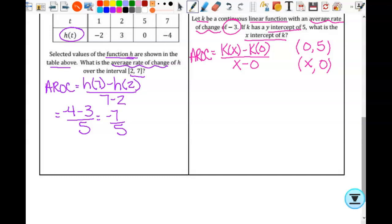What is K(X)? What does this represent? Yeah, 0. It represents the Y value. K(X) is the Y value when X is X. So when I have X value there, my Y value is 0. Minus, what's K(0)? 5 over X minus 0. See where all that came from? Just substituting it in. It's still just slope.